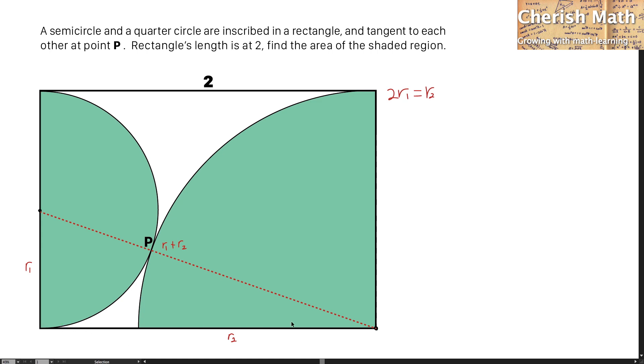Since the length of this rectangle is 2, this will be R1 plus R2 squared equals R1 squared plus 2 squared. I'm going to expand this. This is how it goes, and I can cancel this part.